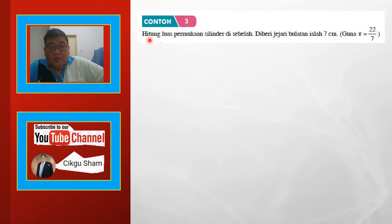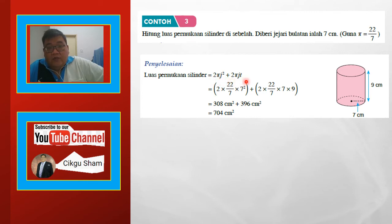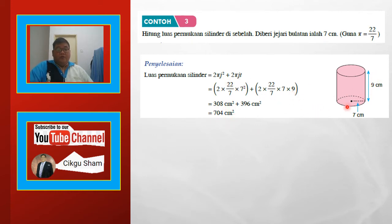Contoh 3: Hitung luas permukaan silinder di sebelah. Dia beri jari-jari adalah 7 dan tinggi dia 9. Jadi kita dah tahu tadi luas permukaan silinder — that's why dia kata hafal. Formula: 2πj² tambah 2πjt. Masukkan je — pi = 22/7, j = 7, t = 9. Selesaikan, dapat 704.